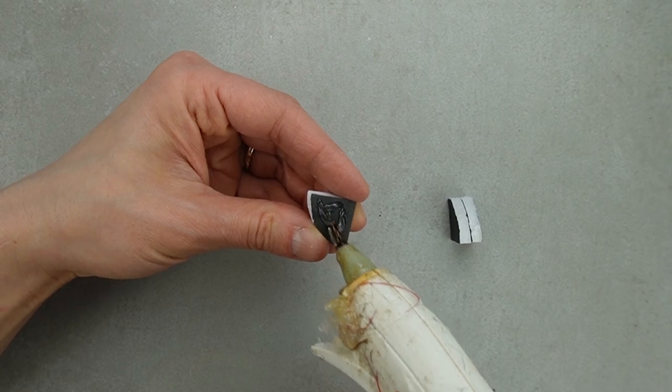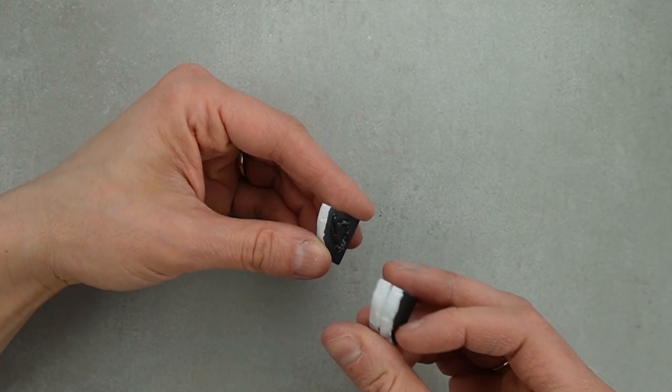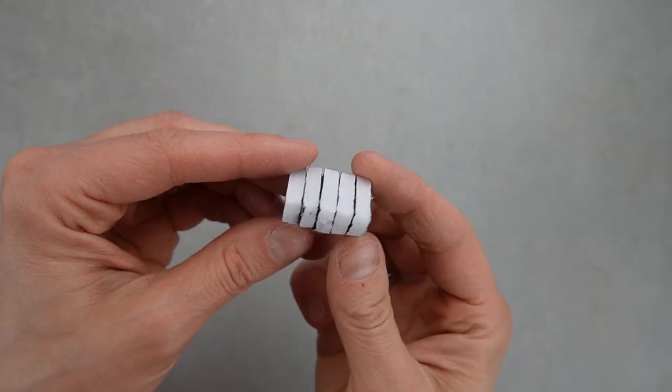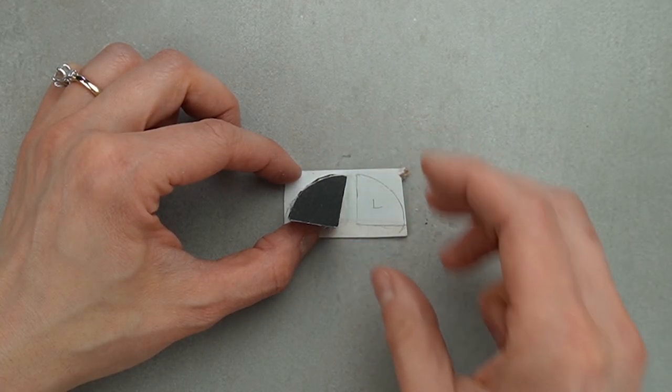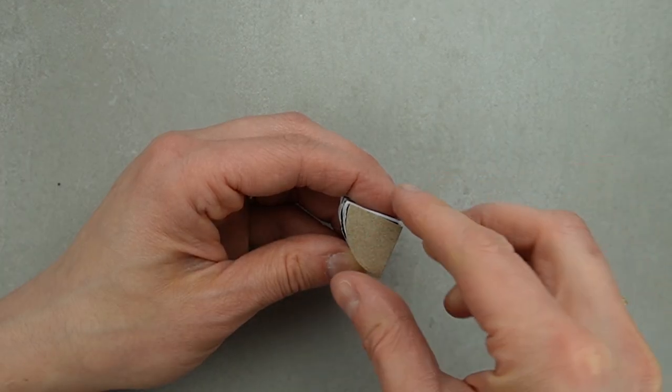I traced one of the wedges onto more foam core and cut a fifth piece so the register will be wide enough. I traced each end onto cereal box and capped each side.